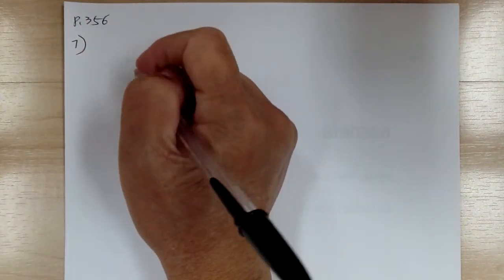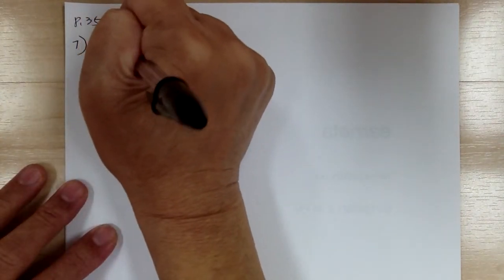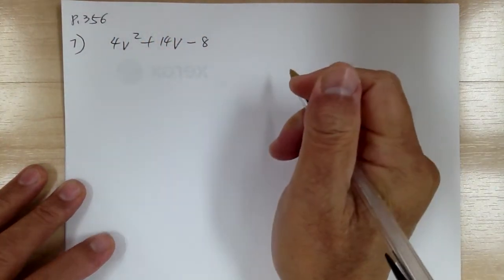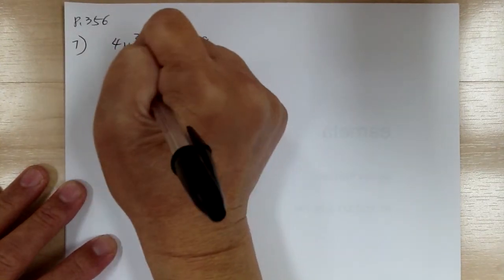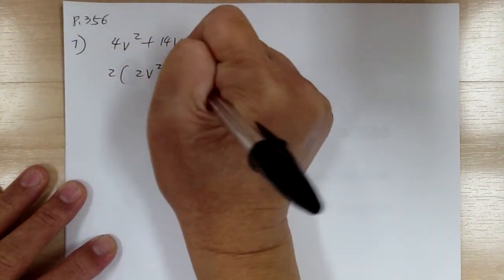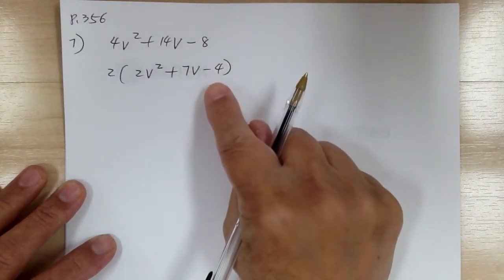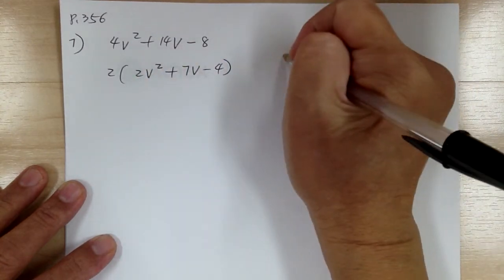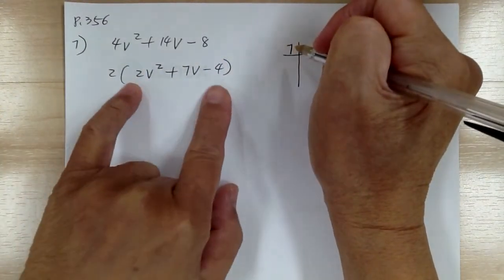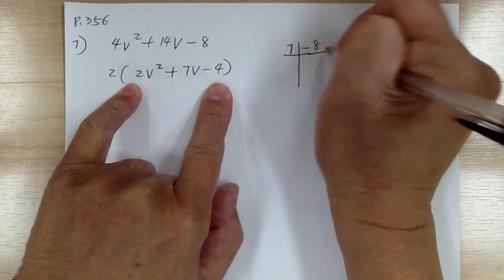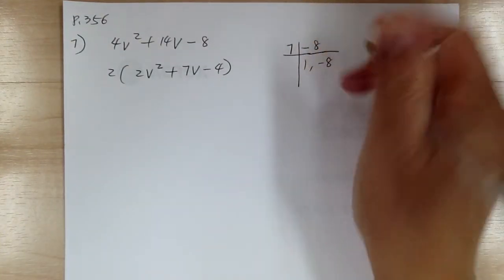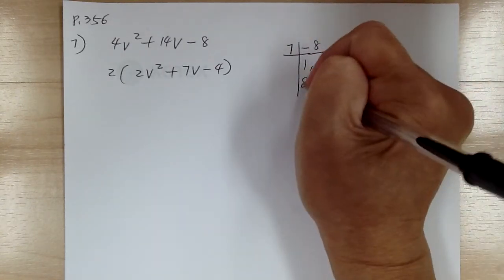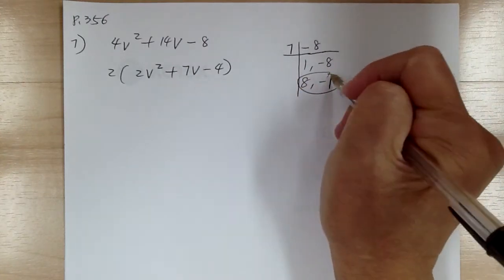Number 7. You have 4v squared plus 14v minus 8. Step 1, common factor. Factor out the 2, so you get 2v squared plus 7v minus 4. Step 2, not a perfect square. Check step 3, cube — no, not a cube. So step 4, master product: 7 and negative 8. Start with 1, negative 8 — gives you negative 7. Number is correct but sign is wrong, so switch. This is the right one.